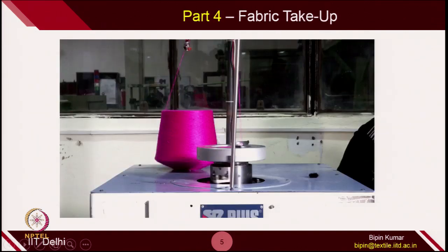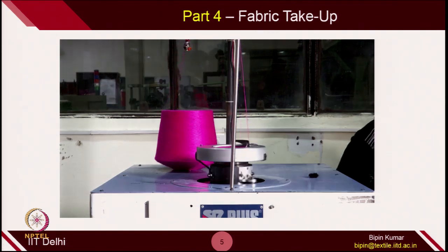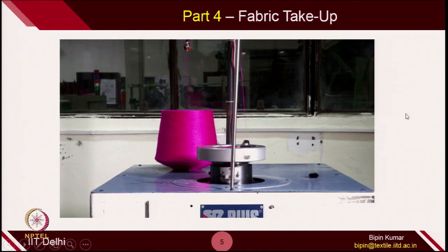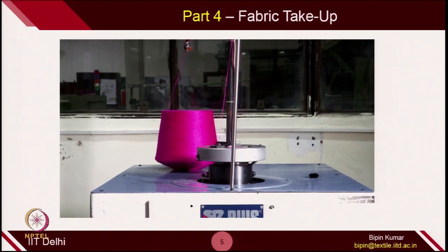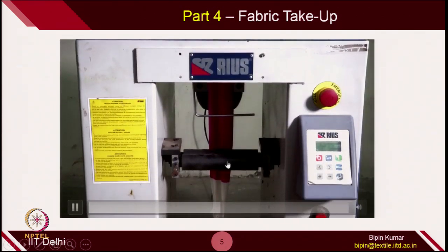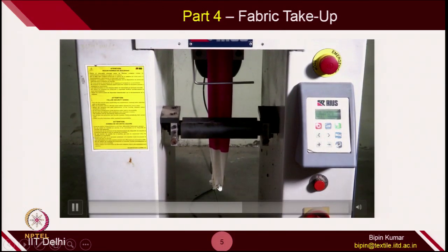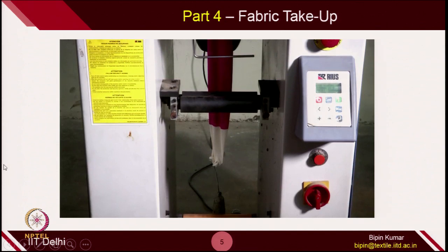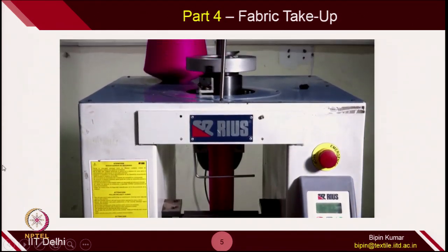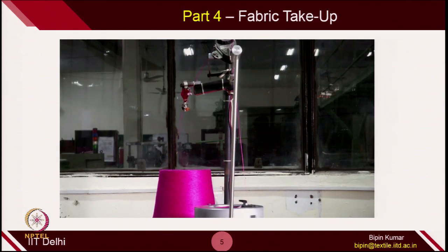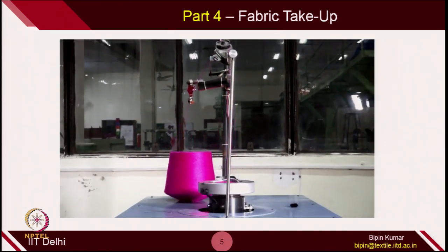This part shows how the fabric is being taken up. The fabric is being formed as the cylinder rotates — the cam is rotating, yarn is supplied, and fabric is being generated. You can see the fabric being taken out; this is a tubular fabric and it is hanging. You need a dead weight to carry and pull the fabric from the knitting zone. This is how fabric take-up is done.